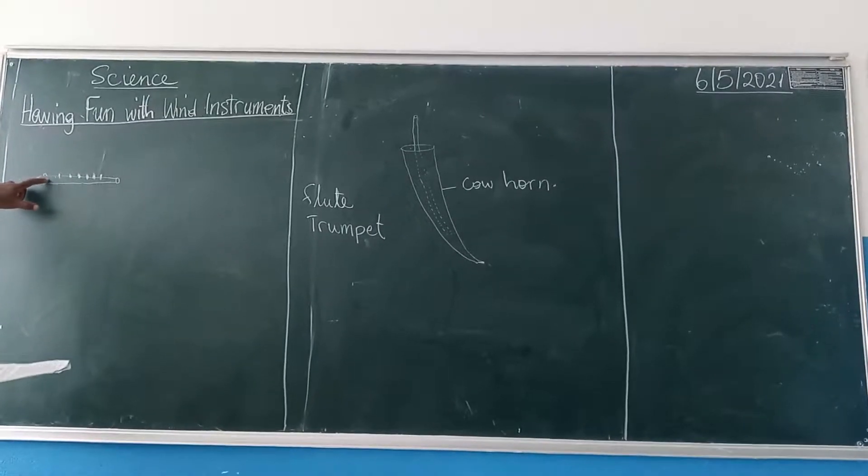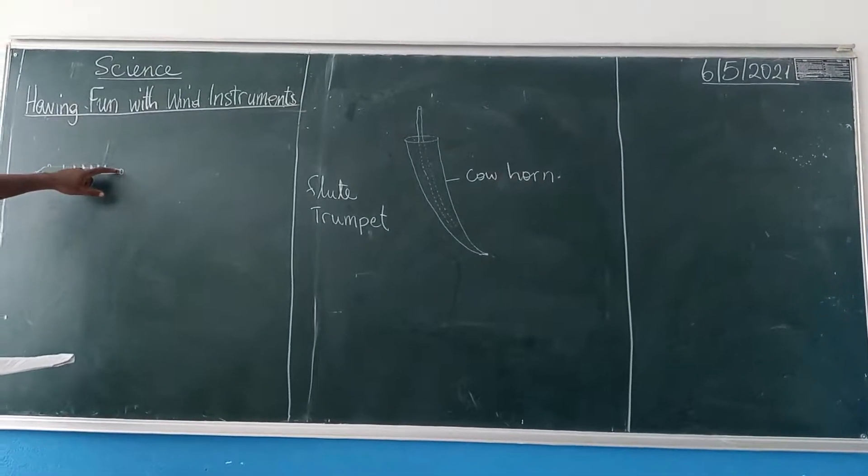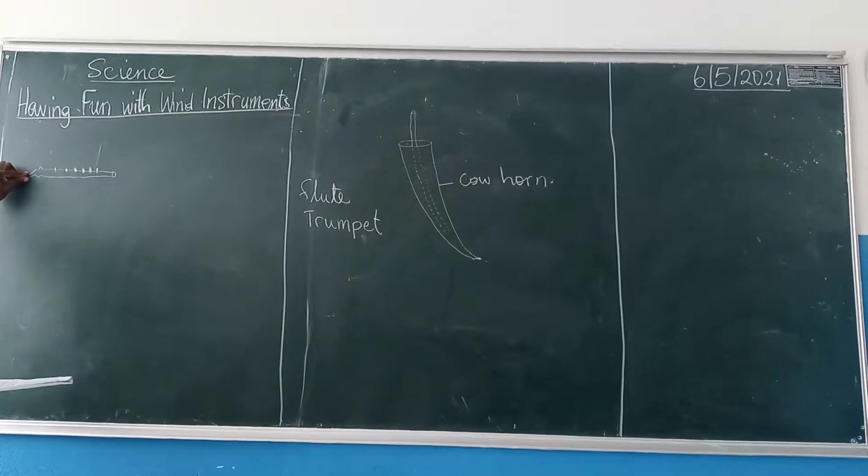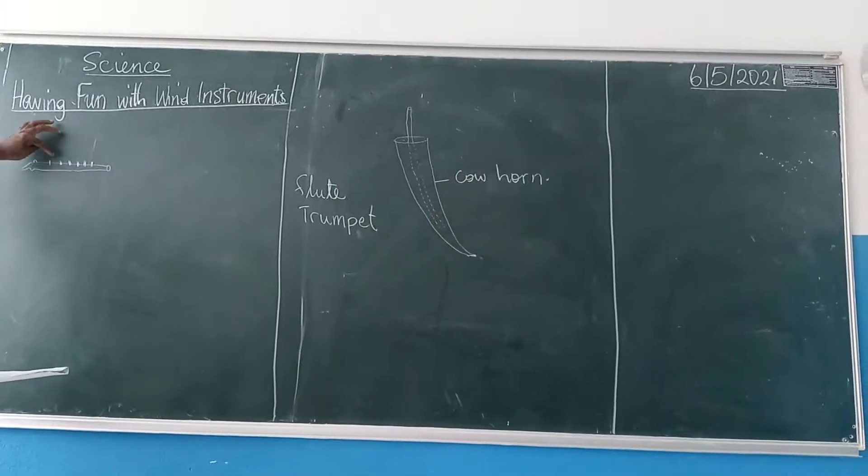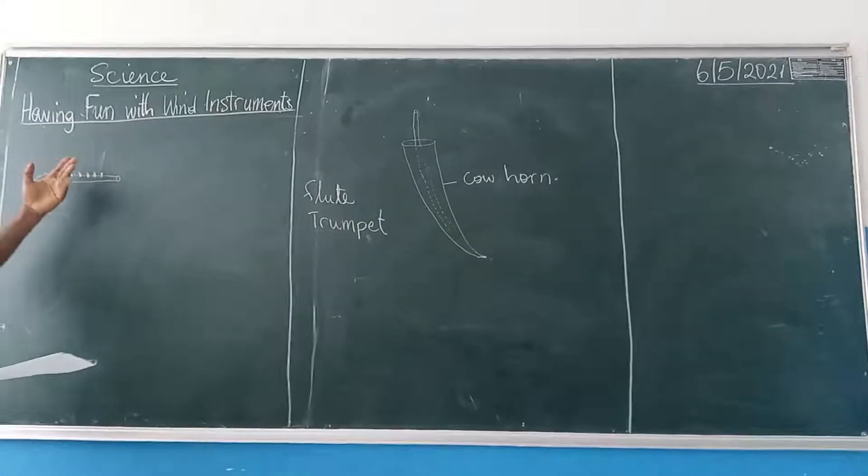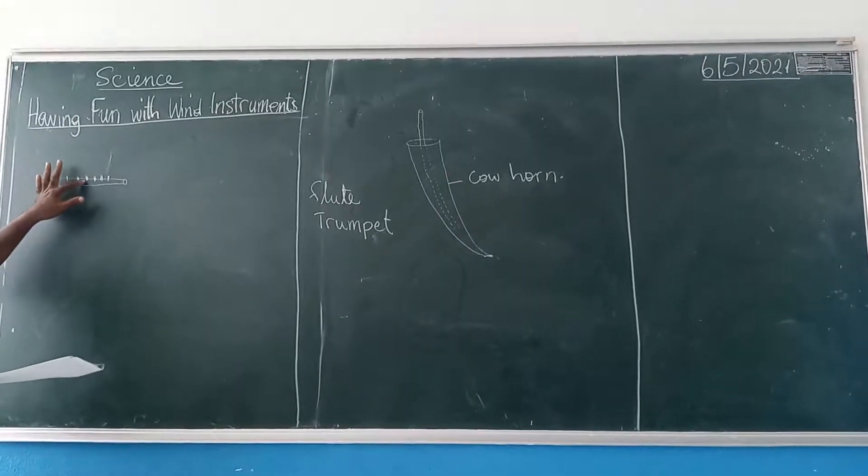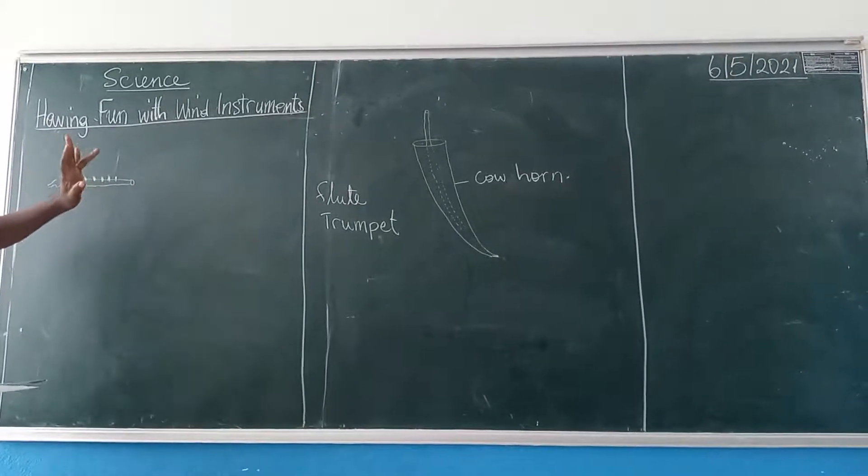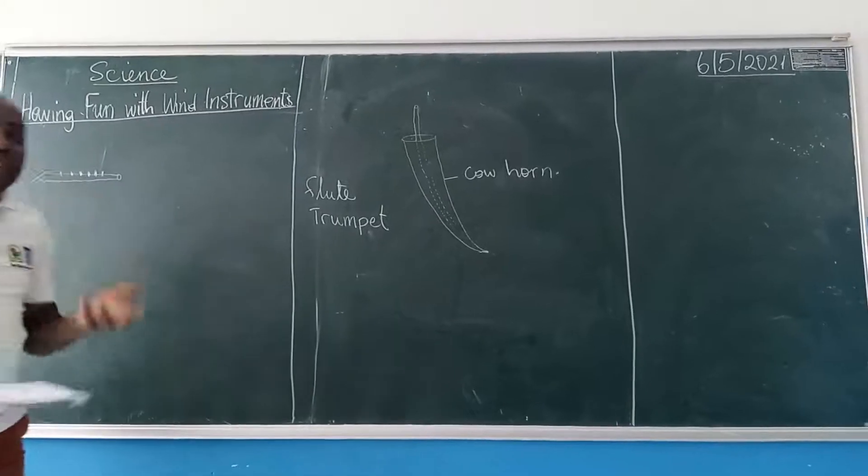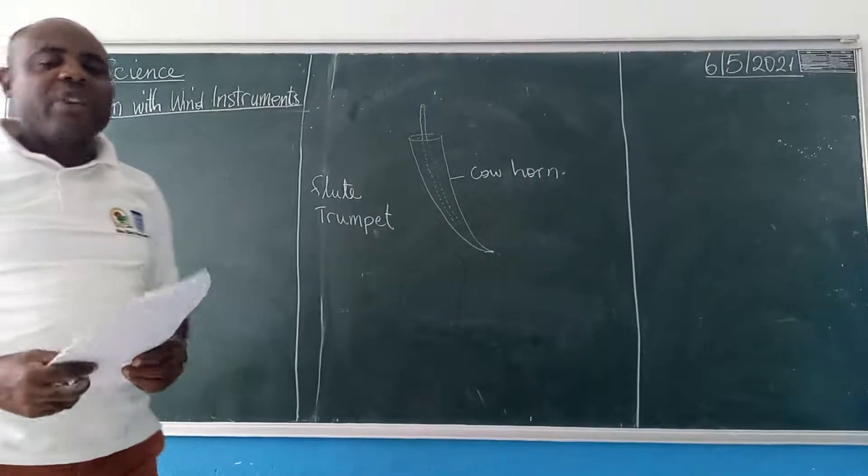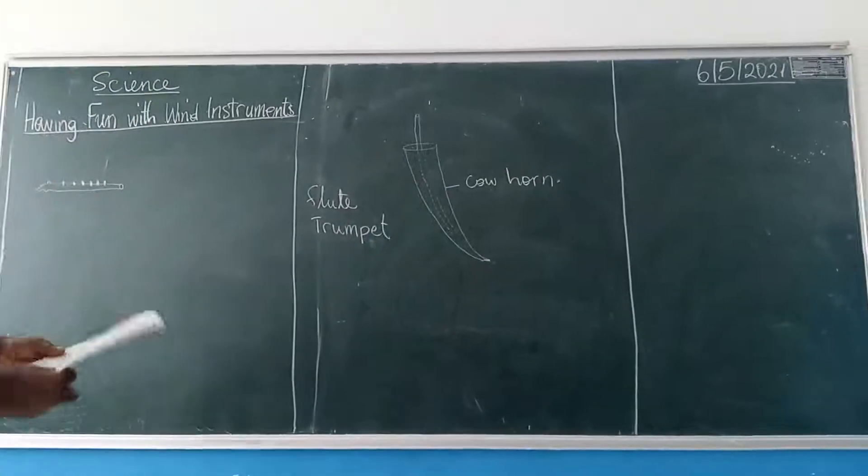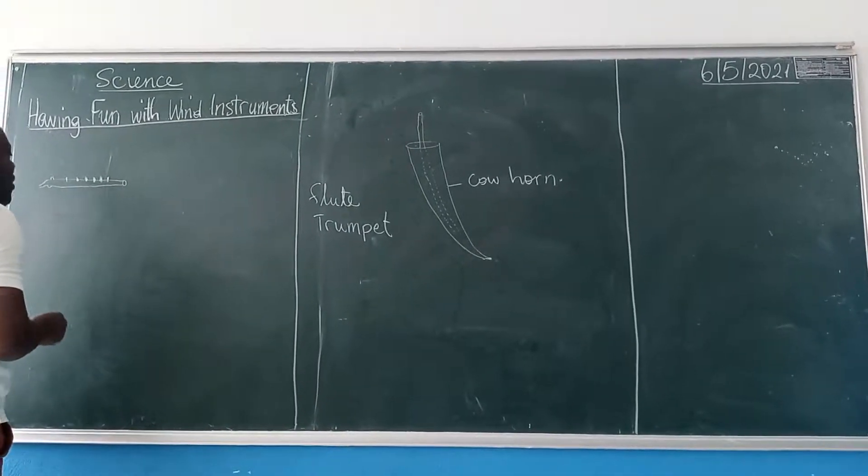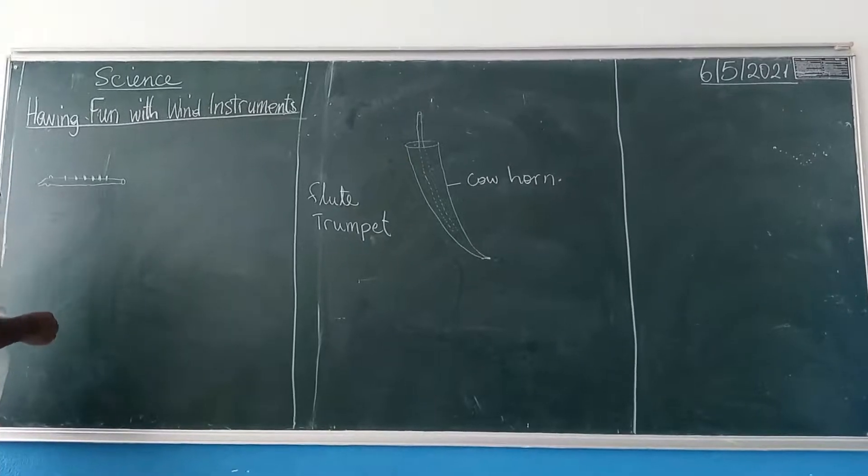So here is a hollow, a hole, and when you blow the air from here it gets inside and it's been controlled with the fingers. We use our fingers to block these holes. And anytime you open and release the fingers out of the hole, it changes the pitch of the sound. So this is an example of a wind instrument.